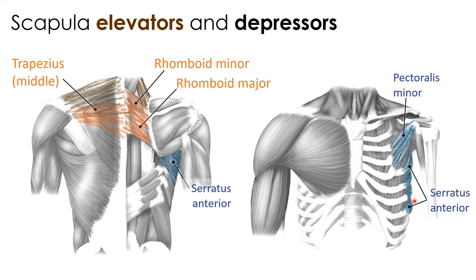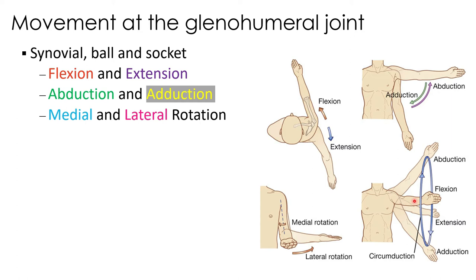Section B addresses the shoulder joint. The anatomical name of this joint is the glenohumeral joint — a synovial ball-and-socket joint, similar to the coxal joint, capable of flexion and extension, abduction and adduction, and medial and lateral rotation. Steps one through six ask you to identify the muscles contributing to each of these movements — go ahead and pause to complete section B before continuing.